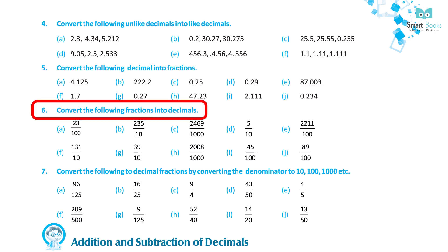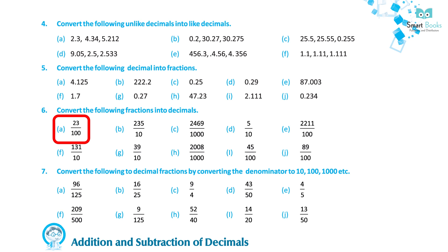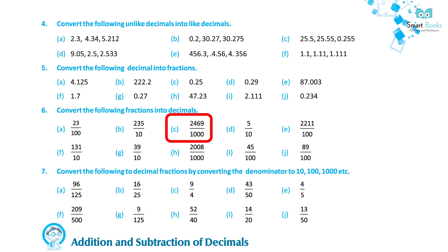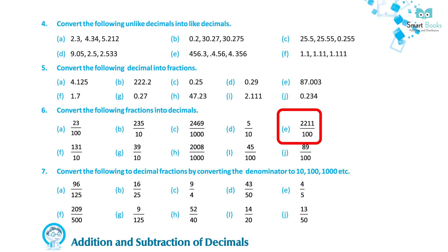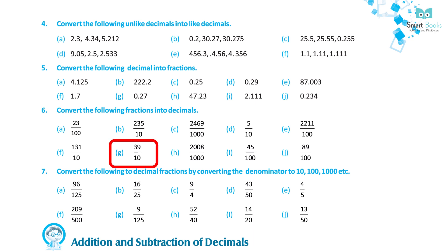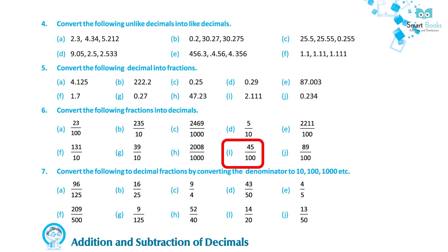Question 6: Convert the following fractions into decimals. A. 23 upon 100 — Solution: 0.23. B. 235 upon 10 — Solution: 23.5. C. 2469 upon 1000 — Solution: 2.469. D. 5 upon 10 — Solution: 0.5. E. 2211 upon 100 — Solution: 22.11. F. 131 upon 10 — Solution: 13.1. G. 39 upon 10 — Solution: 3.9. H. 2008 upon 1000 — Solution: 2.008. I. 45 upon 100 — Solution: 0.45. J. 89 upon 100 — Solution: 0.89.